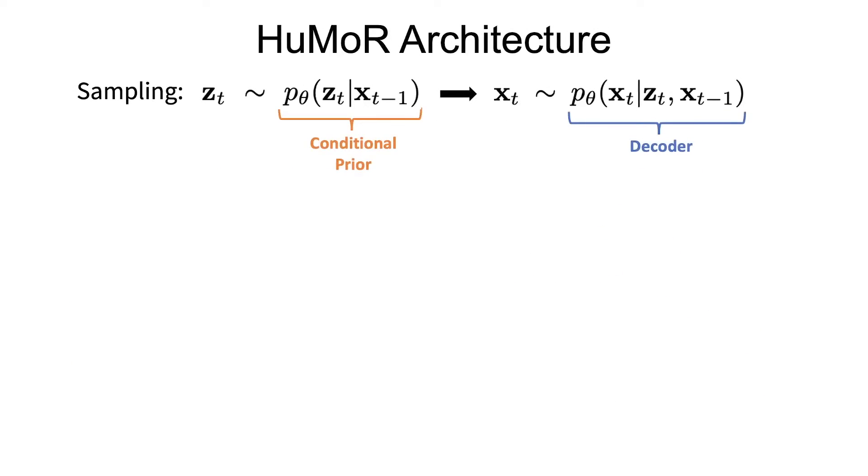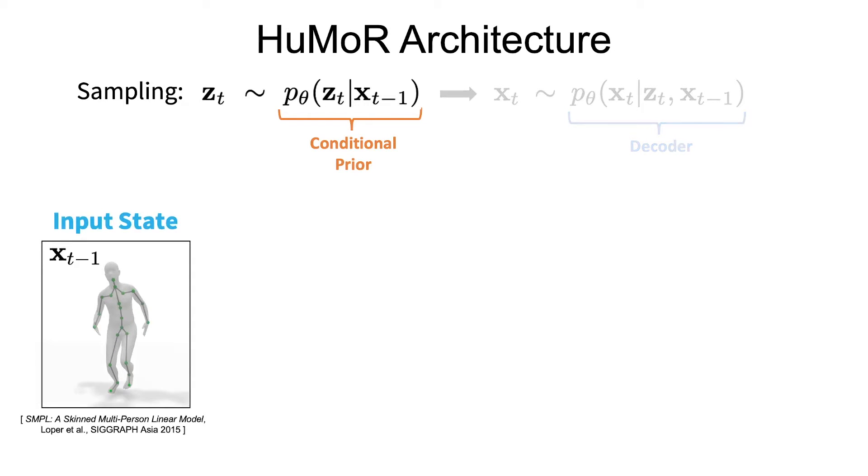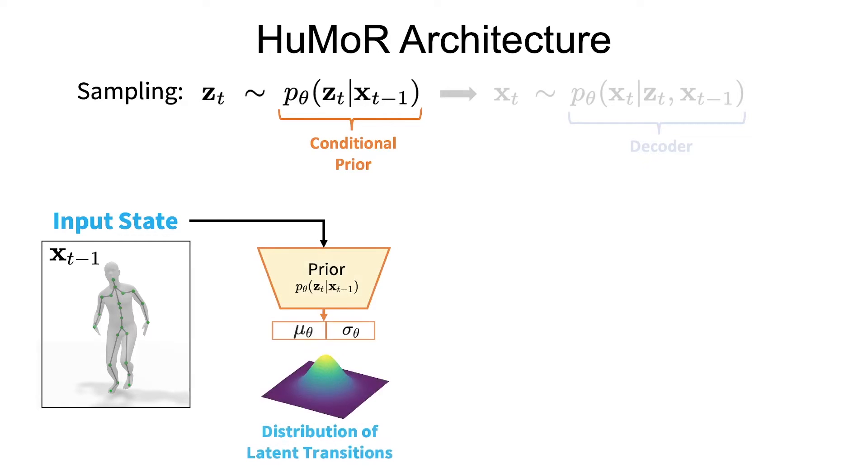Humor is a conditional variational autoencoder. In order to sample a motion sequence, it uses both prior and decoder neural networks. The input is the previous pose state, which is based on the simple body model and includes things like joint angles, positions, and velocities, along with root pose and velocity.